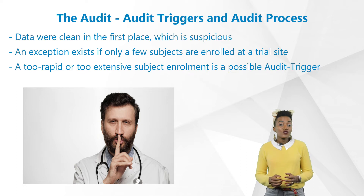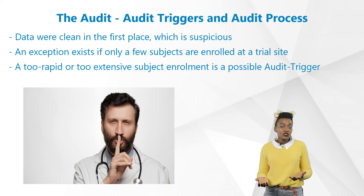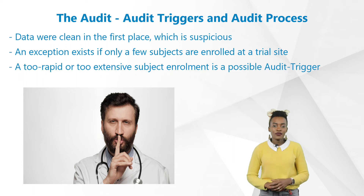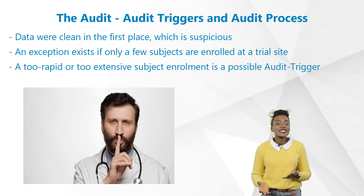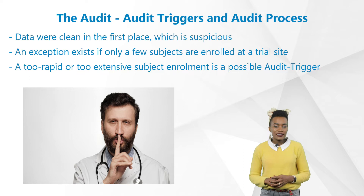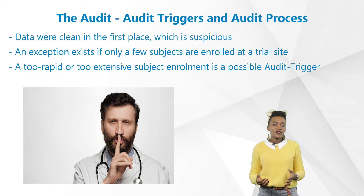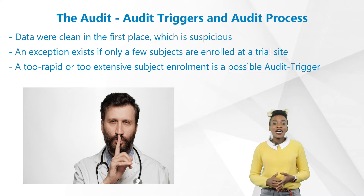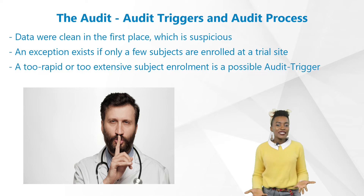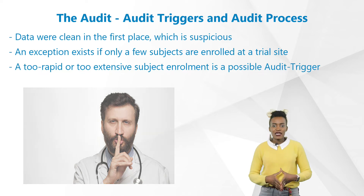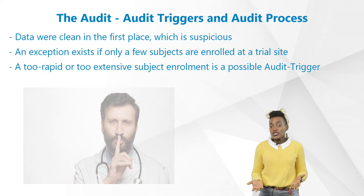An exception of course exists if only a few subjects are enrolled at a trial site. Another example of a possible audit trigger is too rapid or too extensive subject enrollment. As a rule, there is no frequent occurrence — for example, if a town of 50 inhabitants managed to recruit about 120 enrolled subjects within three weeks, that would of course seem suspicious.